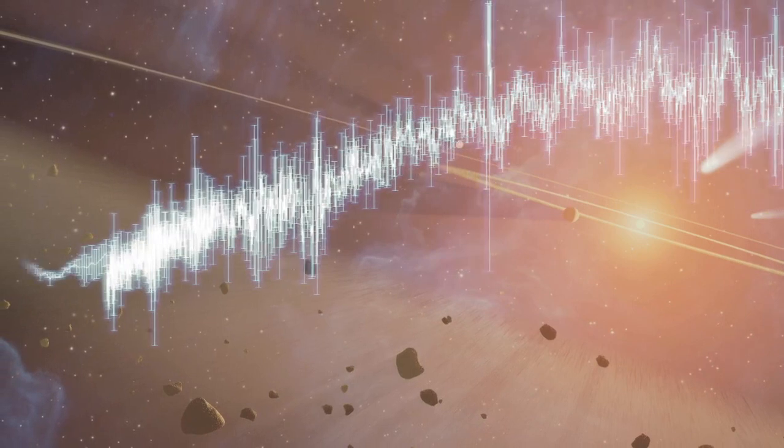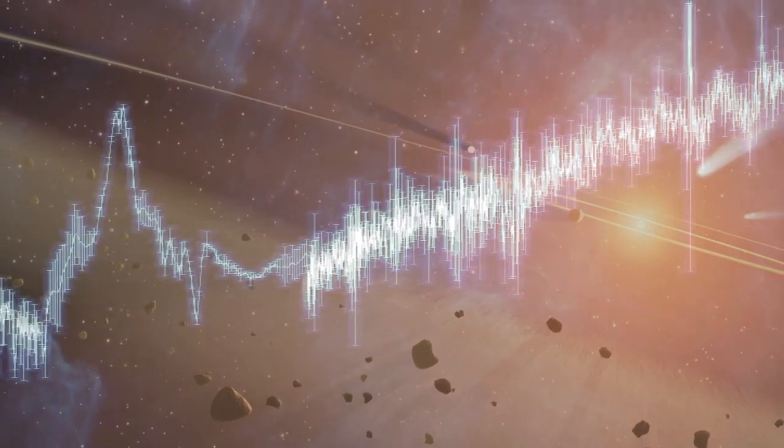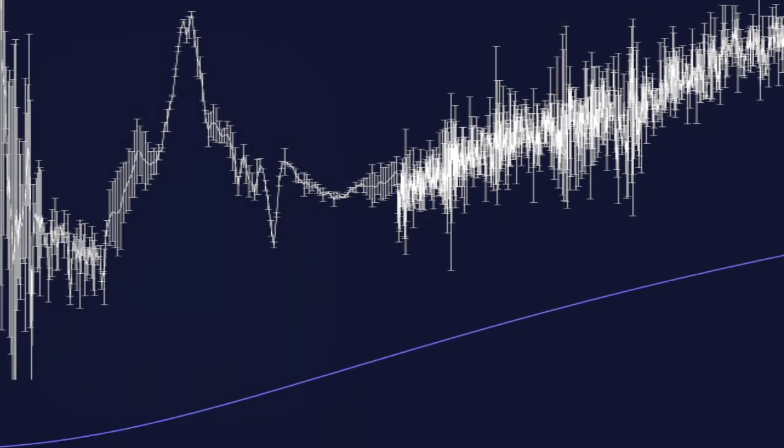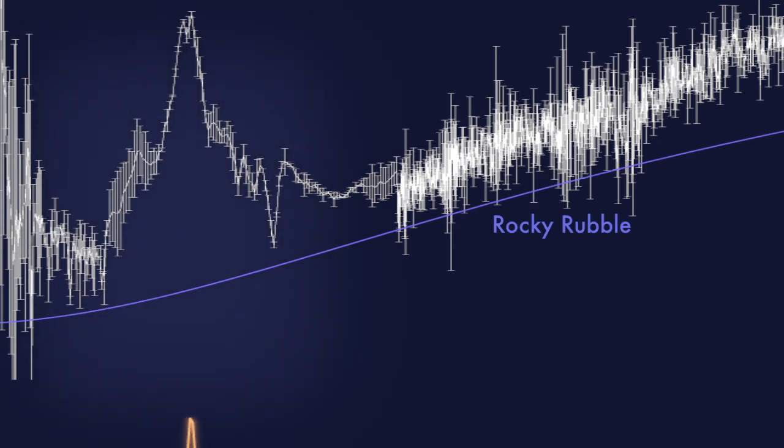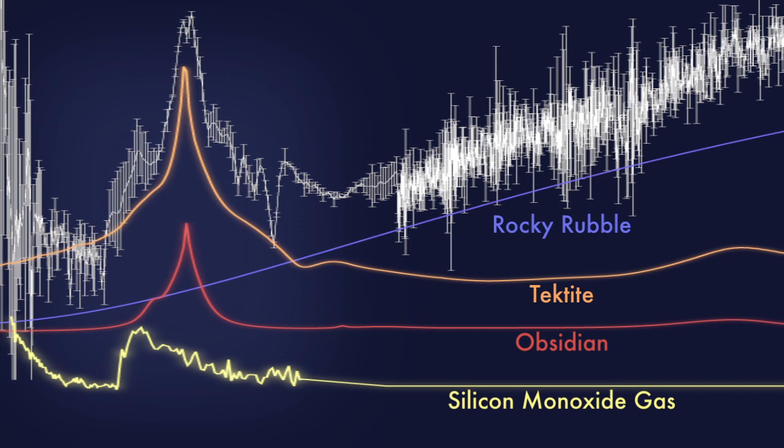Studying the spectrum, Dr. Liss and his colleagues realized they had found something very peculiar that they had not seen around other stars. Aside from the usual indicators of rocky rubble, they found features corresponding to tektite, obsidian, and silicon monoxide gas.